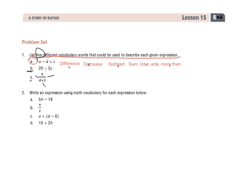Now down below, for A, we have 5B minus 18. I want to use some math vocabulary for each expression. When I go to type this out, there's a couple different ways you could do it, but I'm going to put the product of 5 and B minus 18.